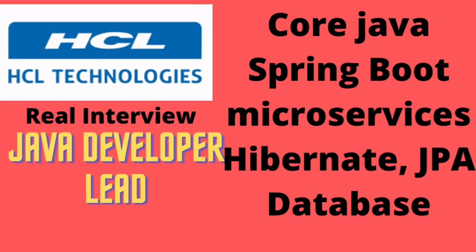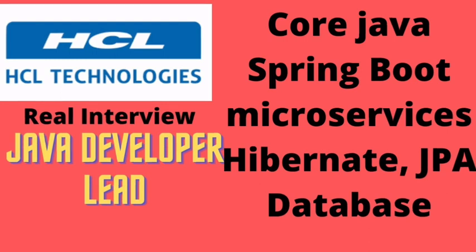Interviewer: In core Java, what is the difference between JDK and JVM? Candidate: Basically when we want to develop our code — develop, compile — then we use JDK. It can modify existing projects, but JVM only provides the environment to run that existing project. So it cannot modify the project, and it is responsible for scheduling threads, providing memory, and handling runtime and memory-related things.